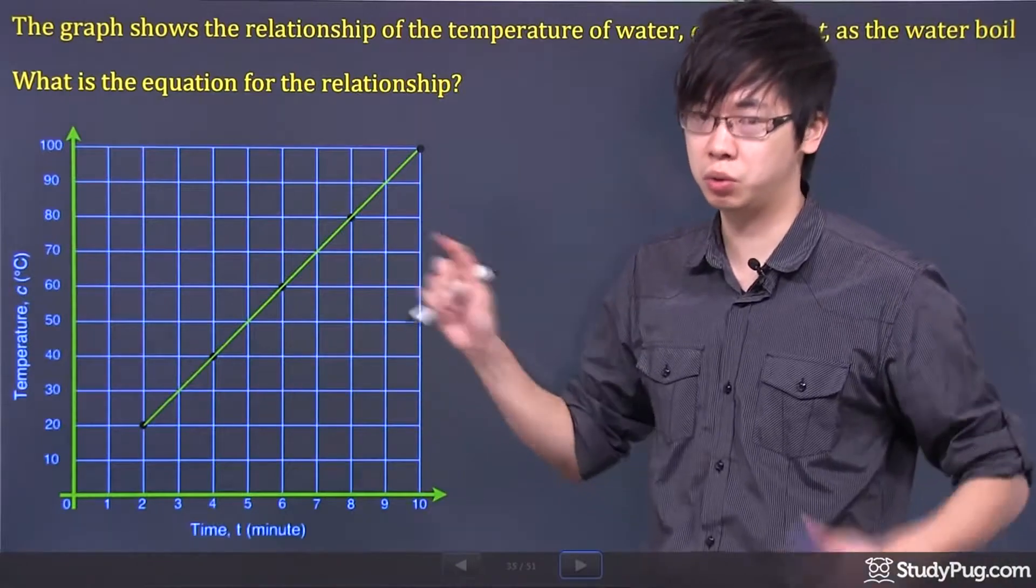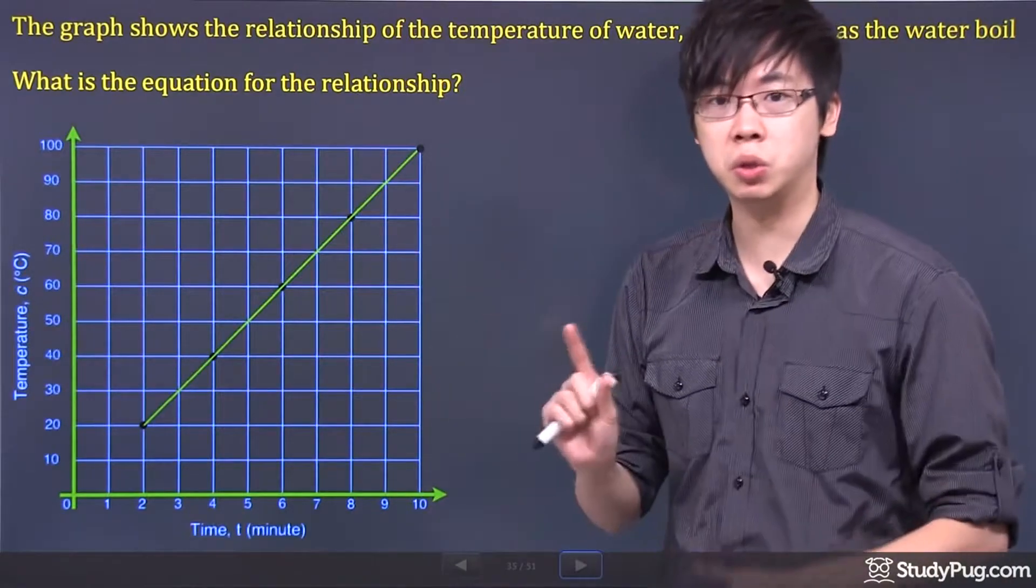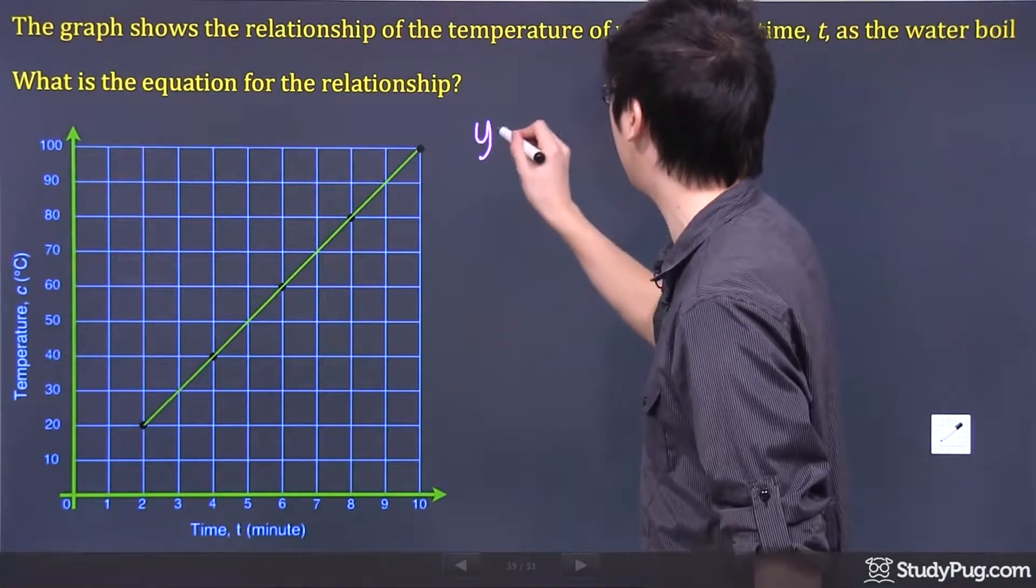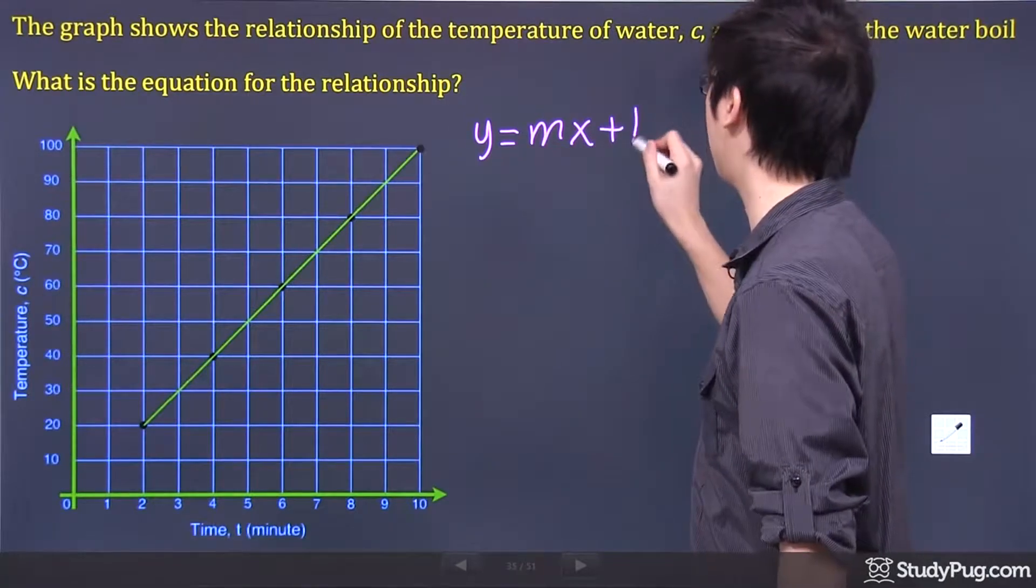It looks like a very straight, single, straight line. So guess what? If you see a straight line, it means you're looking at a y equals mx plus b graph.